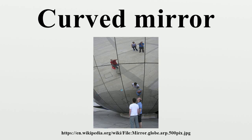The most common non-spherical type are parabolic reflectors, found in optical devices such as reflecting telescopes that need to image distant objects. Since spherical mirror systems, like spherical lenses, suffer from spherical aberration, one advantage that mirror optics have over lens optics is that mirrors do not introduce chromatic aberration.